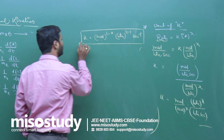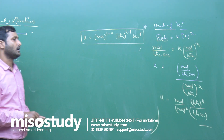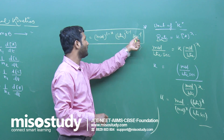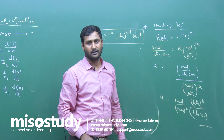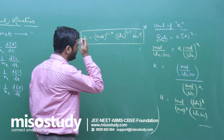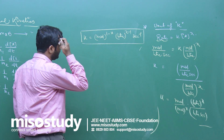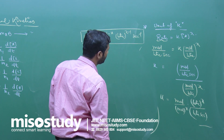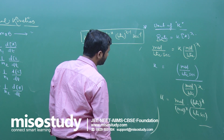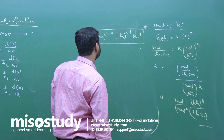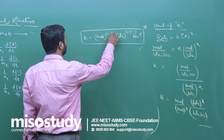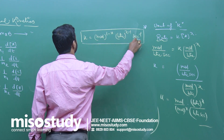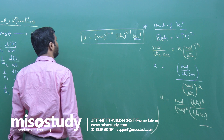This is the general expression — substitute the value of x as per the order. For zero order, k has units of mol per liter per second. For first order, k has units of per second. This can be verified from the rate expression d[x]/dt in mol/L/s divided by concentration in mol/L.